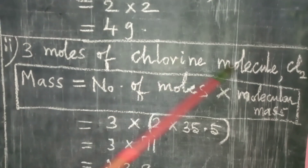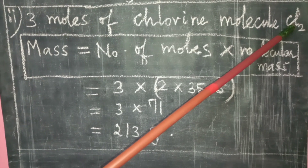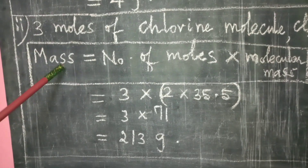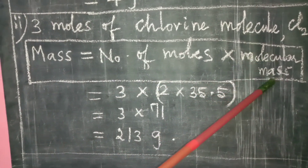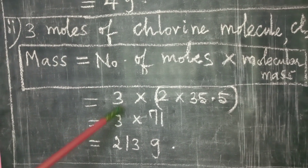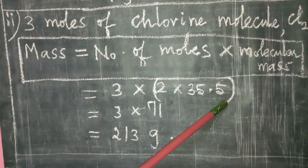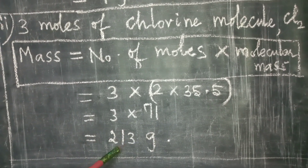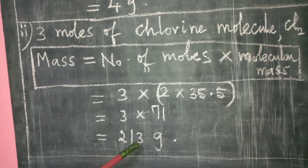Next: 3 moles of chlorine molecule, Cl₂. The atomic mass of chlorine is 35.5. Using the formula, mass = number of moles × molecular mass. Number of moles is 3, so mass = 3 × 2 × 35.5 = 3 × 71 = 213 grams.